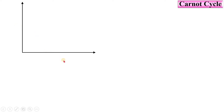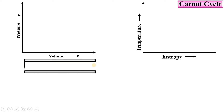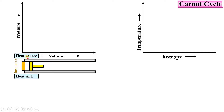Now let's look at the PV diagram — pressure versus volume — and the TS diagram — temperature versus entropy. Consider a cylinder with a piston; the space is filled with the working substance, which is our system. An insulator is placed over the cylinder so there is no heat transfer. The heat source supplies heat at temperature T1, and the heat sink receives rejected heat at temperature T2, where T1 is greater than T2.